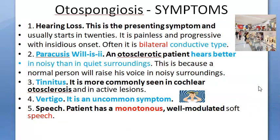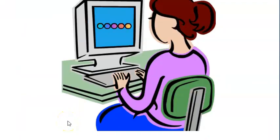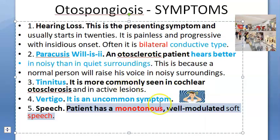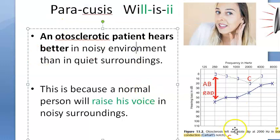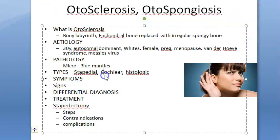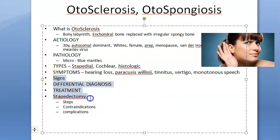Patients with otosclerosis have a monotonous, well-modulated, soft speech pattern — their voice does not vary much in pitch, remaining monotonous. To recap symptoms: bilateral conductive hearing loss, paracusis Willisii, tinnitus (especially in cochlear otosclerosis and active lesions), vertigo (uncommon), and monotonous speech.